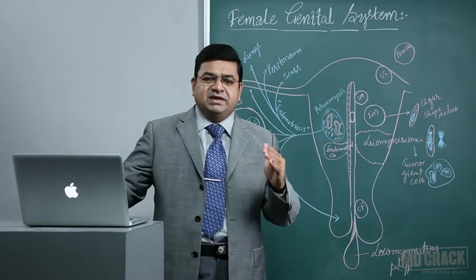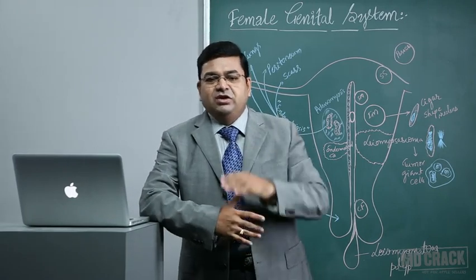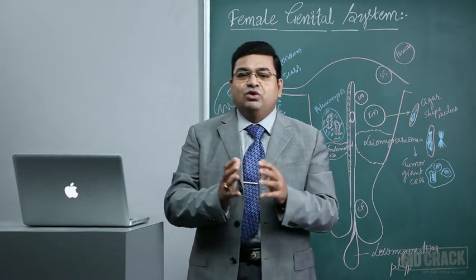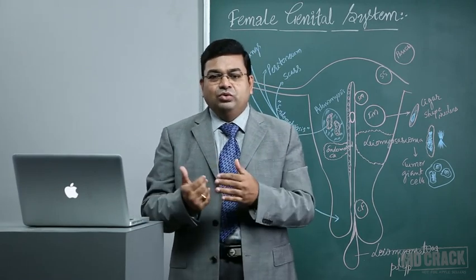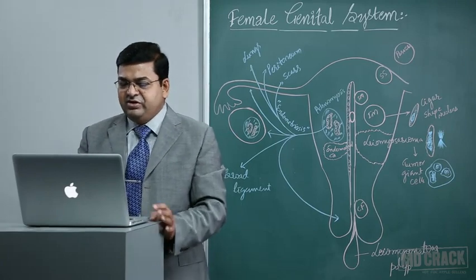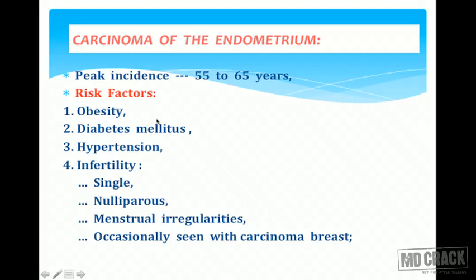Untreated complex hyperplasia with nuclear atypia carries a very high chance of progression to endometrial carcinoma. Endometrial carcinoma is the most important tumor, mainly due to hyperestrogenic status. Peak incidence is in postmenopausal women aged 55 to 65 years. Risk factors include hyperestrogenic status from nulliparity, unopposed estrogen levels, obesity, diabetes, and hypertension. Single or unmarried nulliparous women with menstrual irregularities are also at higher risk.